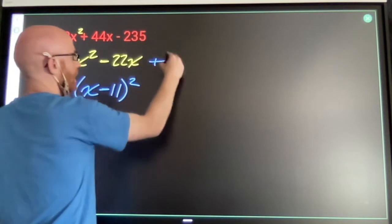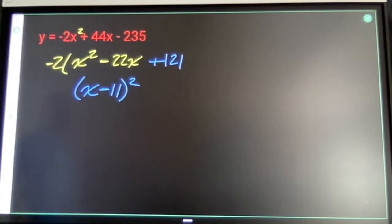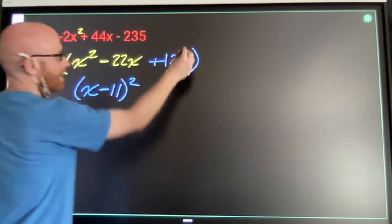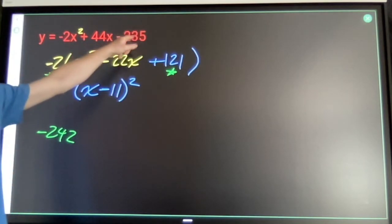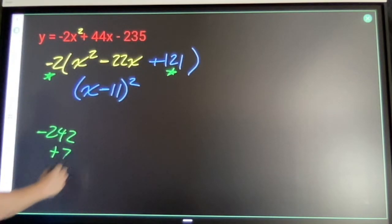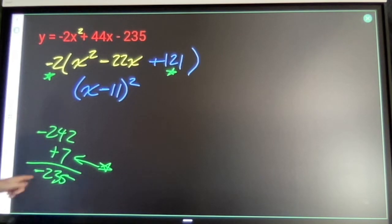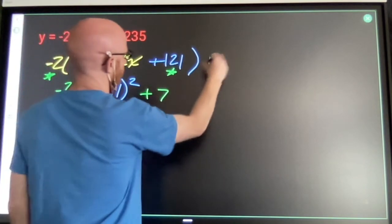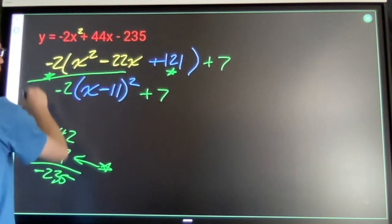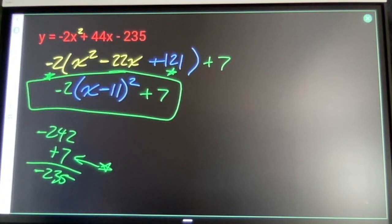That leaves me with a plus 121 in this position. Negative 2 times 121 is negative 242. We want the answer to be negative 235, so we're going to need to add 7 to make the answer negative 235. That's vertex form.